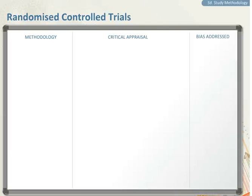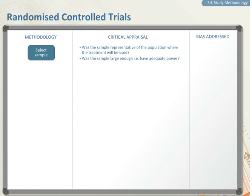The gold standard RCT — let's look at critically appraising the study. You have designed a hypothesis and obtained approval from the ethics committee. The first step is sample selection. Ask yourself the following: was the sample representative of the population where the treatment will be used?